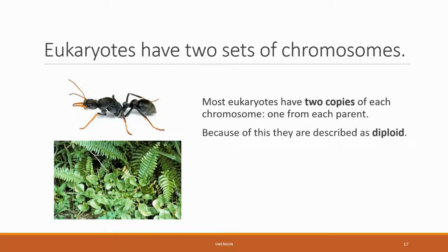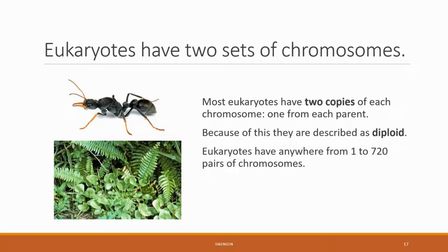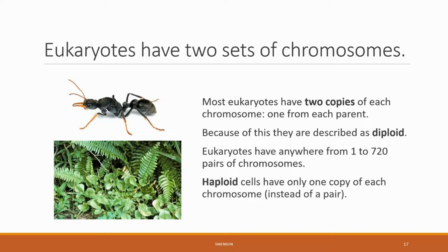The ant Myrmecia pilosula has one pair of chromosomes, and the fern Ophioglossum reticulatum has 630 pairs of chromosomes — so 630 different books, all with two copies of each.